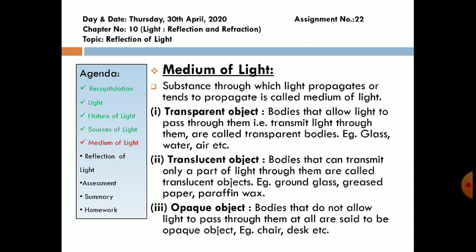A transparent object. Body that allows light to pass through them completely. That is, transmit light through them are called transparent objects such as glass, water, air.